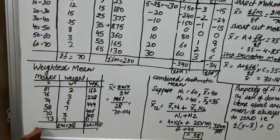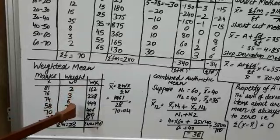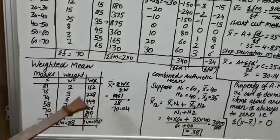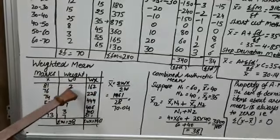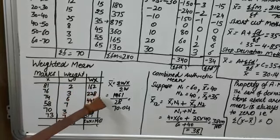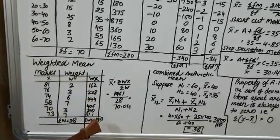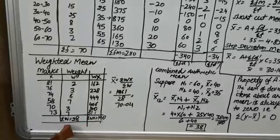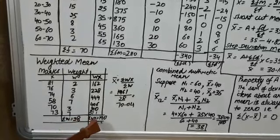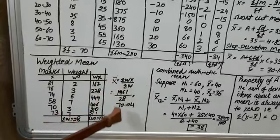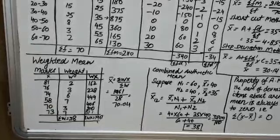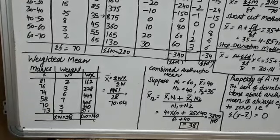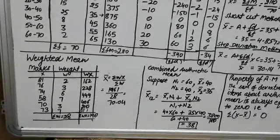In weighted mean, instead of frequency, weights are given. Marks scored by students are given, and different weightage is assigned to the marks. We write w instead of f, then calculate wx: 81 × 2 = 162, and in this way 228, 444, 406, 210, and 511. Sigma w = 28, sigma wx = 1961. The formula is mean = sigma wx / sigma w = 1961 / 28 = 70.04, which is the weighted arithmetic mean.